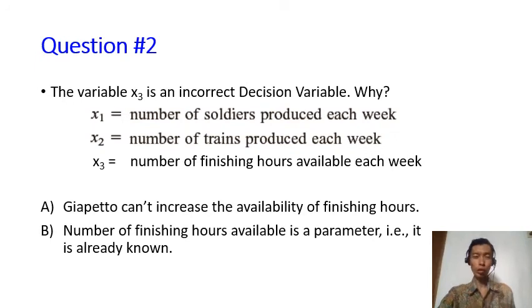Now the second question: why is x3 here an incorrect decision variable? Same as before, I will give you the answer after the pause.